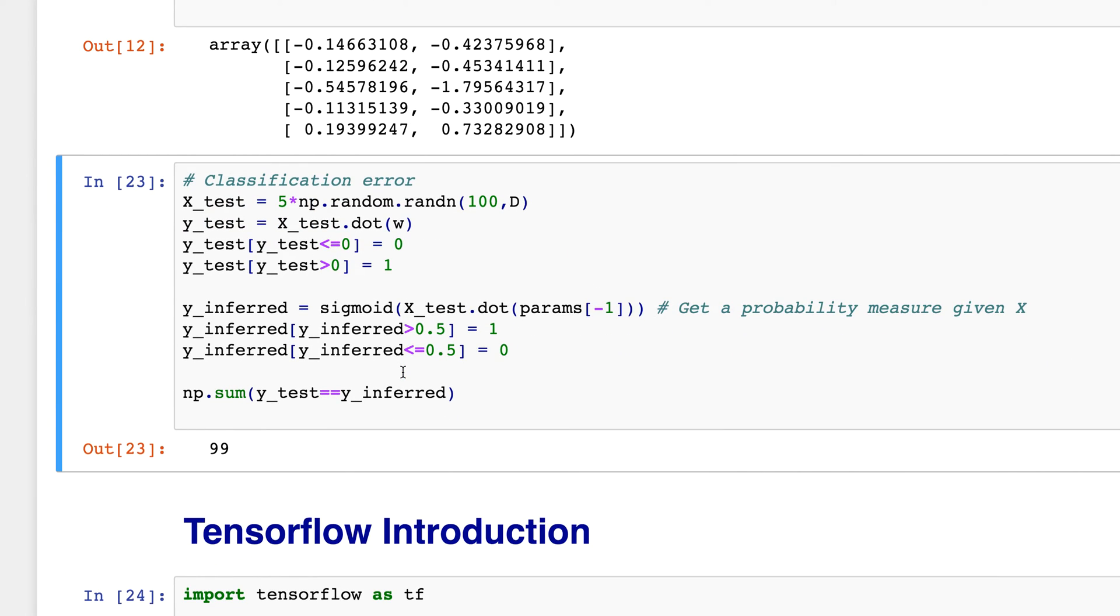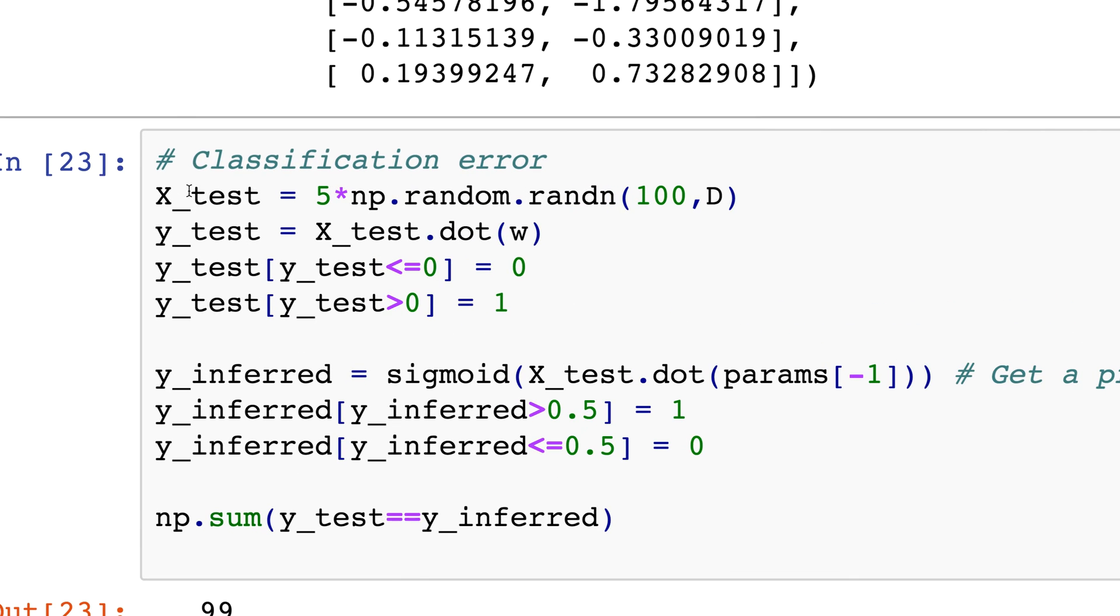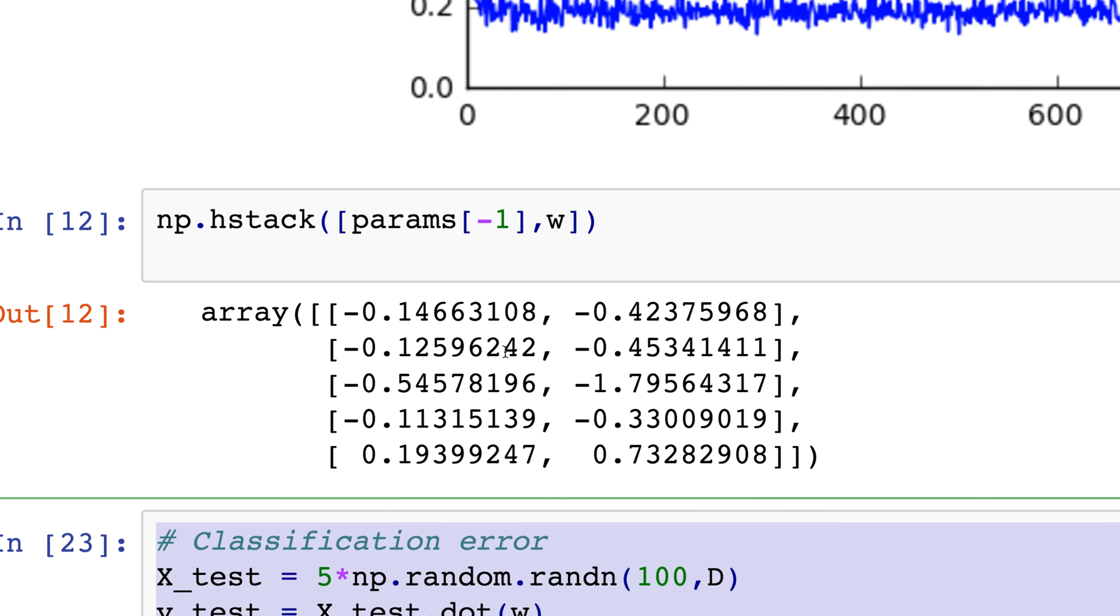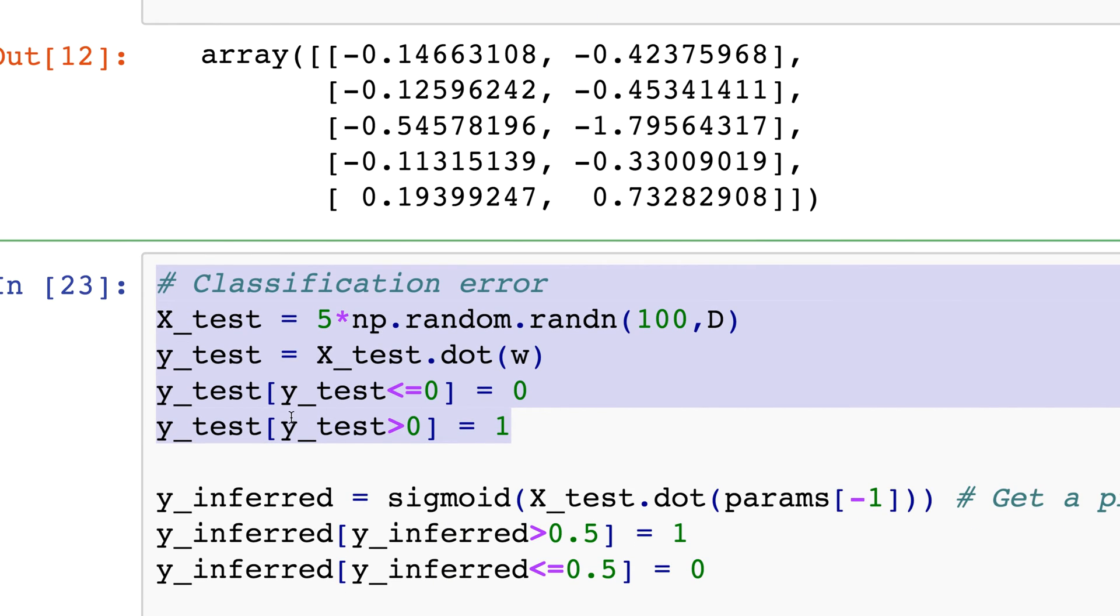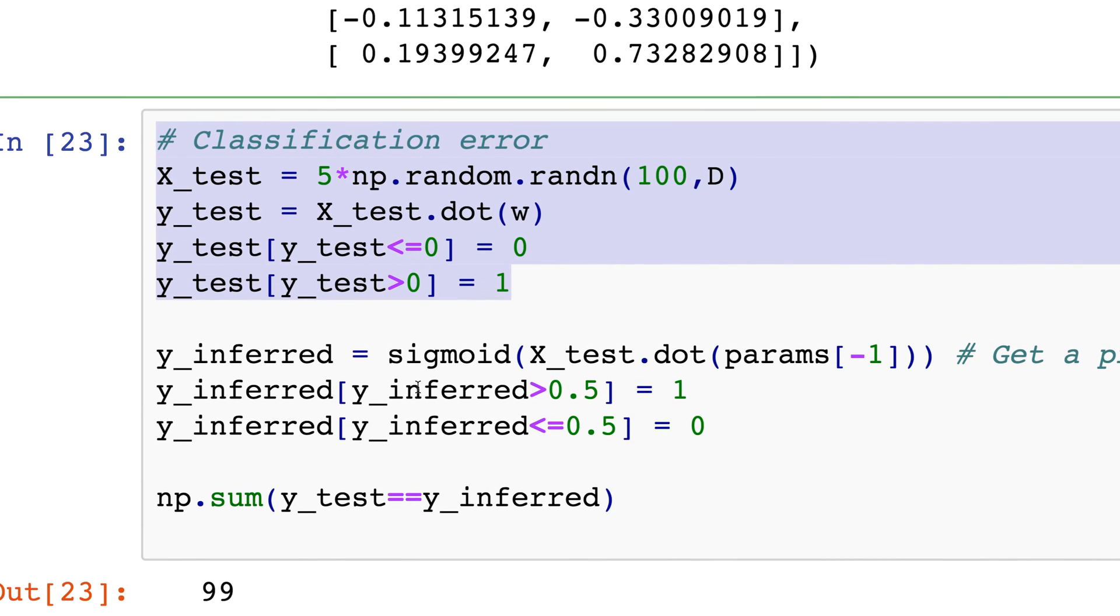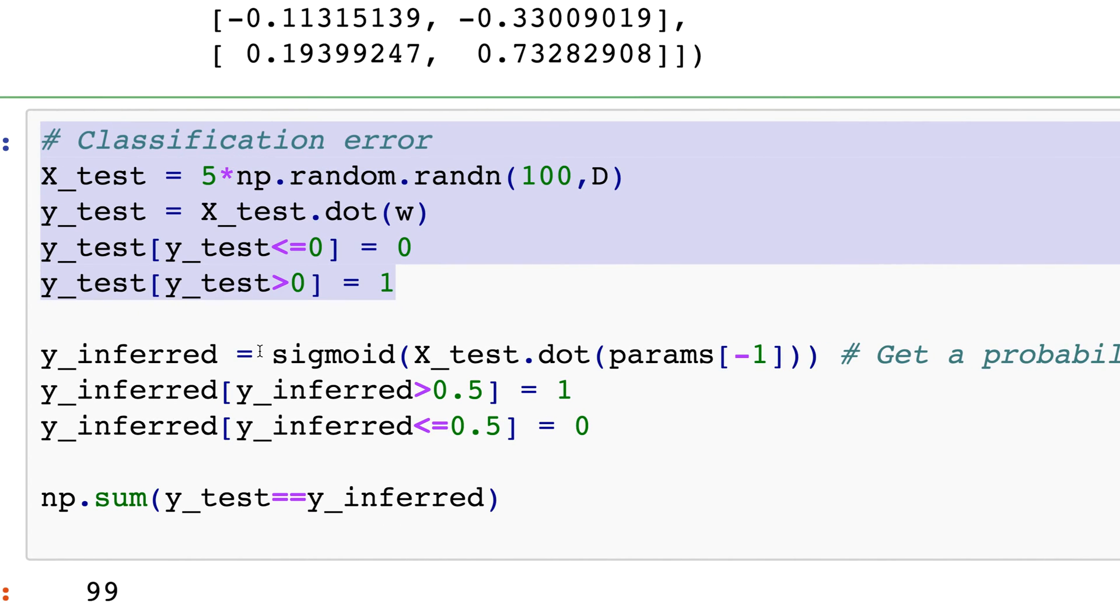But what's really important is that when we have a test set, or in this case a random test set, what's important is that it agrees with what we should find. So over here I've created a synthetic, so these first four lines is a synthetic test set, but then what we do is we're going to see my inferred y that I figured out is going to be